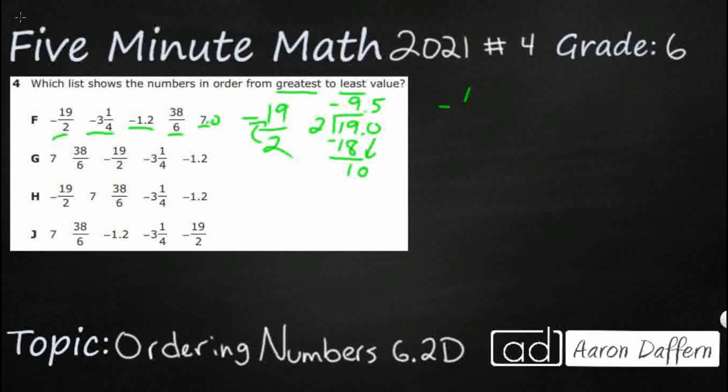So, let's say negative 19 halves is the same as negative 9.5. And since we were looking at it, it was also negative 9 and a half. So, that's going to help us with that one.